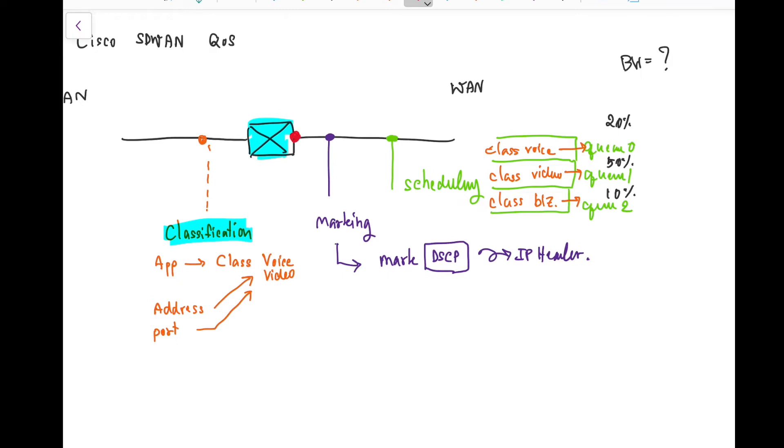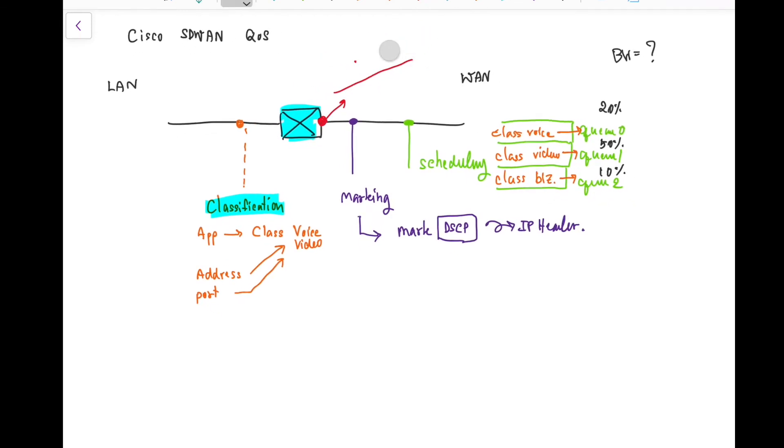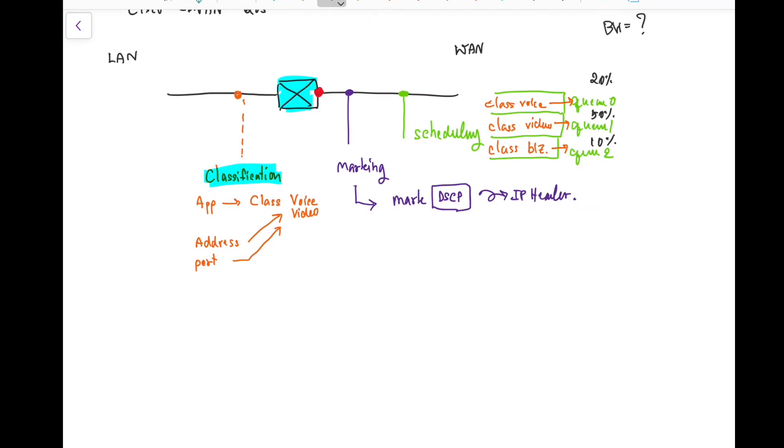What is the bandwidth here? The bandwidth is configured on the WAN interface, which is in the SD-WAN of Cisco. We need to put the shaping rate there. So if we don't put the shaping rate there, it's going to use the default interface, which is 1 gigabit per second or 10 gigabit per second.